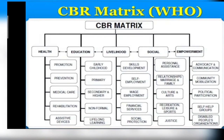Now comes the CBR matrix given by WHO, which has five pillars: health, education, livelihood, social, and empowerment. Under health: promotion of health benefits, prevention of disability, medical care, rehabilitation, and providing information about and access to assistive devices.